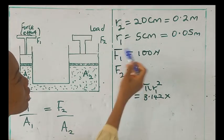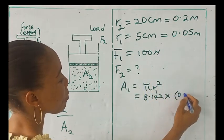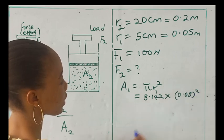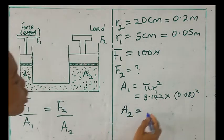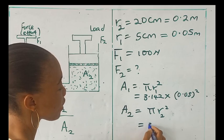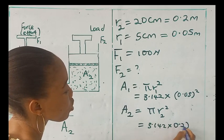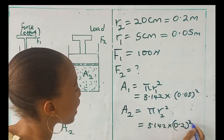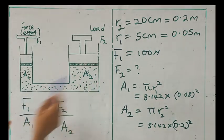So for the area A1, we'll have it times R is 0.05 all squared. So let's go ahead and put it in this formula to find F2.